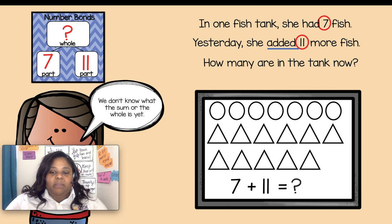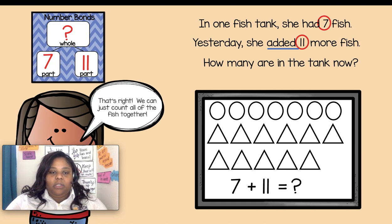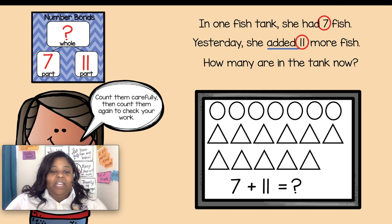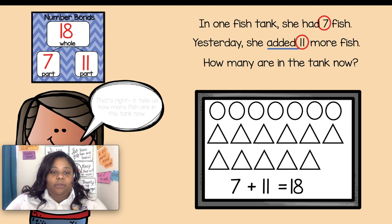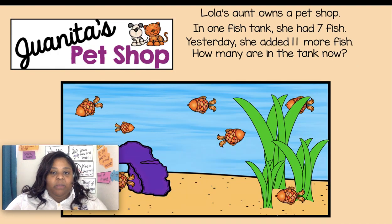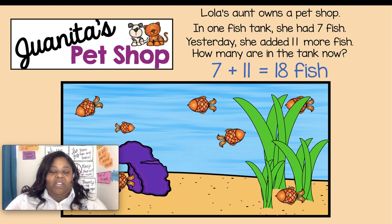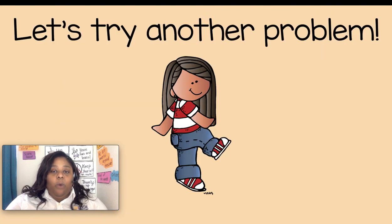We don't know what the sum is yet or the total. Tell a partner how we can figure out the whole. That's right, first grade — we can just count all the fish together. Count them carefully and then count them again to check your work. Did you get 18? Great! Now what does the 18 tell us? It tells us how many fish are in the tank now. Let's go back to our story problem: 7 plus 11 equals 18 fish.